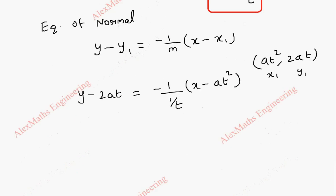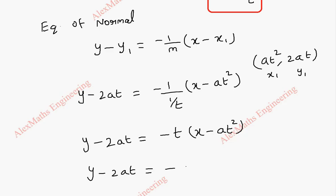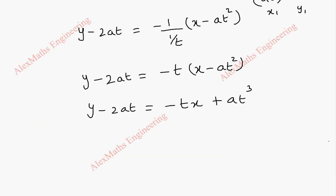Since m = 1/t, we have −1/m = −t. Carrying t up, y − 2at = −t(x − at²). Expanding the right side gives y − 2at = −tx + at³. Rearranging and bringing everything to one side: tx + y − 2at − at³ = 0. This is the equation of the normal.